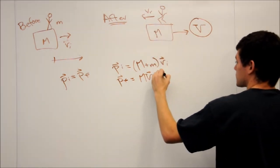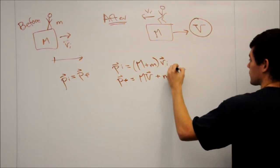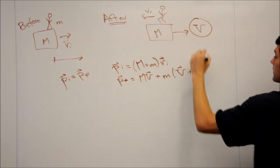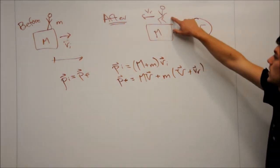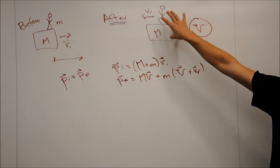And then for the man, it's going to be a little bit more complicated. So PF is going to be little m, and then we take the velocity of the reference frame, and we have to add in his relative velocity to the cart.